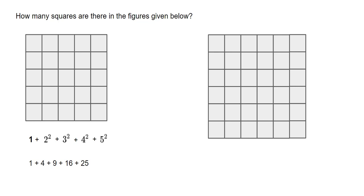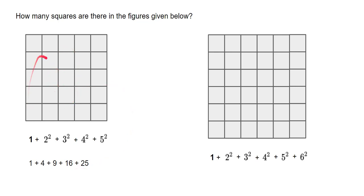There are methods to find this total easily, but for now we go with this method. This gives us a total of fifty-five. So there are fifty-five squares in this five by five diagram.